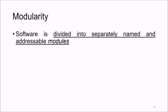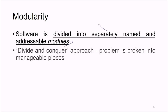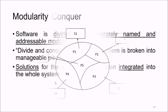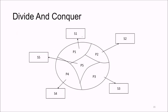Modularity involves dividing the software into separately named and addressable modules, using a divide-and-conquer approach. The problem is broken into manageable pieces — P1, P2, P3, P4, P5 — and the solution for each piece is then integrated into the whole system.